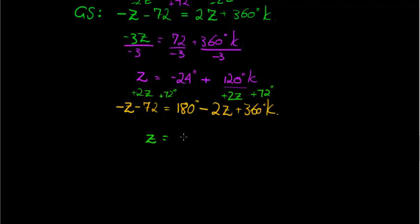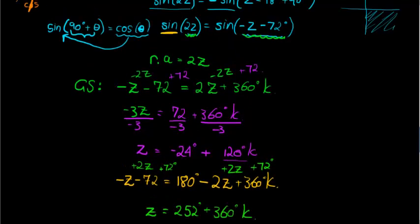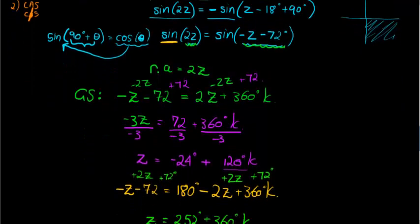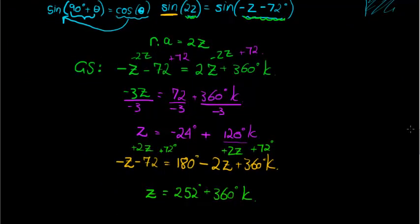180 plus 72 gives me 252° plus 360° times k, and that is the second part of my solution. That's it. That is the general solution to this equation. You can see why it's called a complex trig equation. It's not simple, and it's going to take some practice. But the more you practice, the quicker you will recognize it when you see it on a paper. See you in the next video.